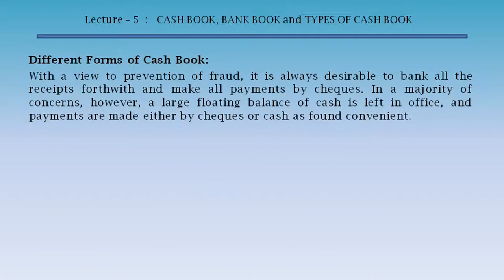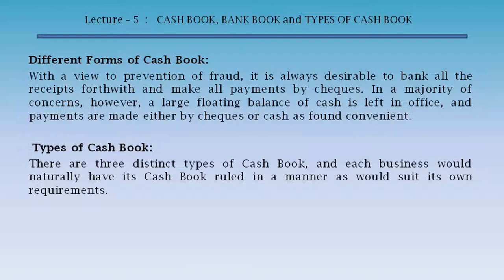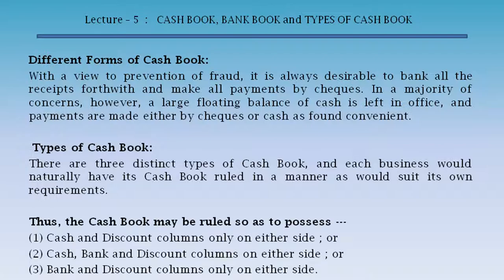Different forms of cash book. With a view to prevention of fraud, it is always desirable to bank all the receipts forthwith and make all payments by cheques in a majority of concerns. However, a large floating balance of cash is left in office, and payments are made either by cheques or cash as found convenient. There are three distinct types of cash book: cash and discount columns only on either side; or cash, bank and discount columns on either side; or bank and discount columns only on either side.